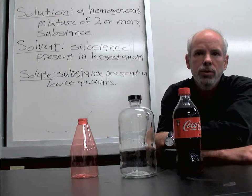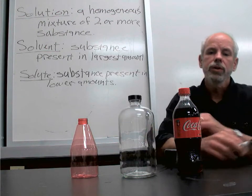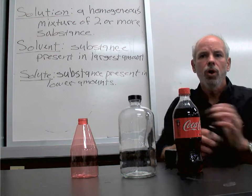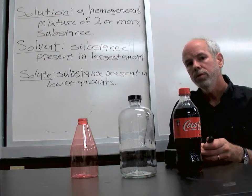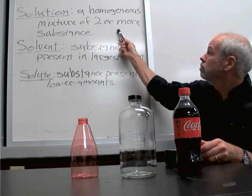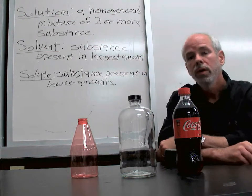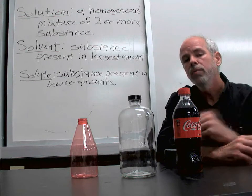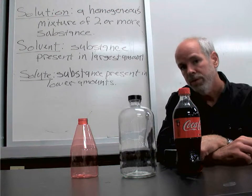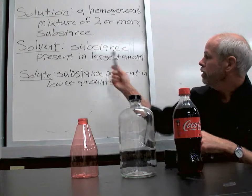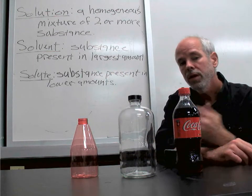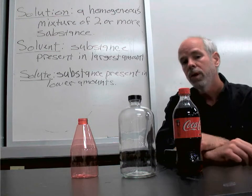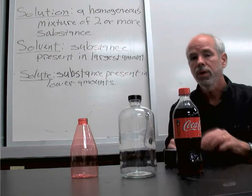Once you have an aqueous solution, we have to define some words that describe it. First, the substances all mixed together are called the solution. The one substance in the mixture that is highest in amount is the solvent — present in the largest amount. The other parts of the mixture that are present in lower amounts are referred to as solutes.